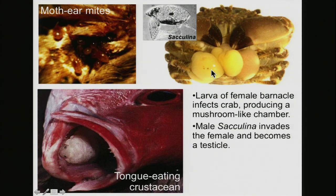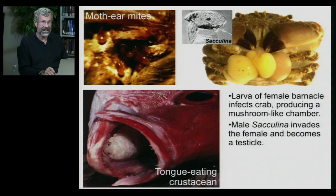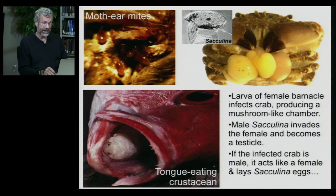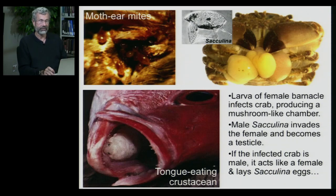Once the chamber is formed, a male sacculina arrives, gets inside, loses his legs, loses his eyes, and essentially becomes just a testicle — a source of sperm for the rest of his life. If the host crab happened to be male, it becomes a robot under sacculina's instructions, starts behaving like a female crab, and lays eggs — but they are sacculina eggs. It has been completely taken over to work solely for the good of the parasite.